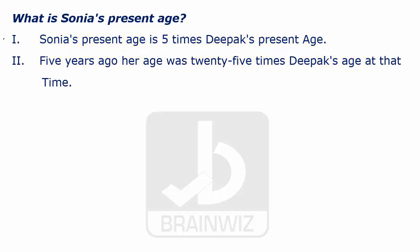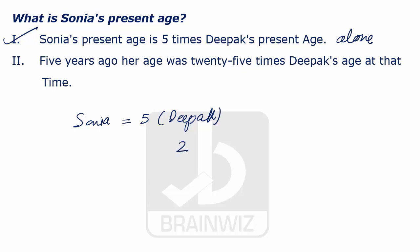Let's try to go with statement one alone. It says that Sonia's age is five times of Deepak's age. Statement one is not sufficient to answer. Maybe Deepak can be two years, so Sonia will be ten years. If Deepak's age is three years, Sonia will be 15. As we have no idea what Deepak's age is, we cannot find out the age of Sonia. So statement one alone is not sufficient.